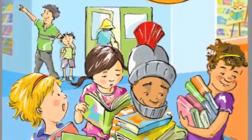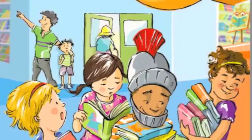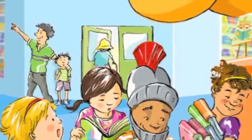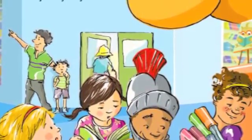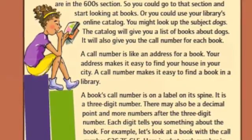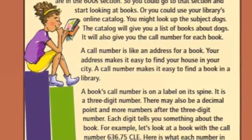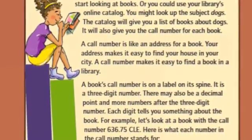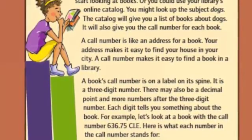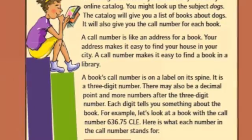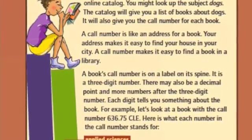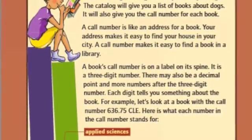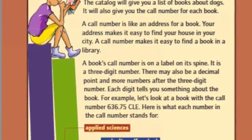The Dewey Decimal System uses each distinct division to help you find nonfiction books with speed and precision. So let the numbers lead you as they guide you through each zone. How can you use the Dewey Decimal System to find a book? You have two choices. Let's say you want to find a book about dogs. Books about pets, including dogs, are in the 600 section, so you would go to that section and start looking. Or you could use the library's online catalog — look up the subject dogs, and the catalog will give you a list of books about dogs along with the call number for each.